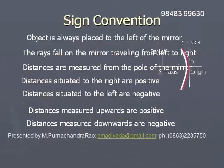Distances measured perpendicular to the principal axis are positive in the upward direction and negative in the downward direction, because upward is the positive direction of the y-axis and downward is the negative direction of the y-axis.